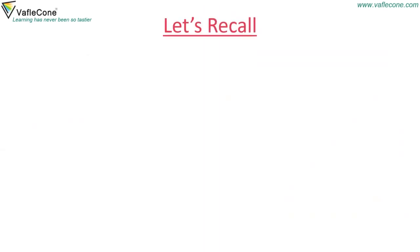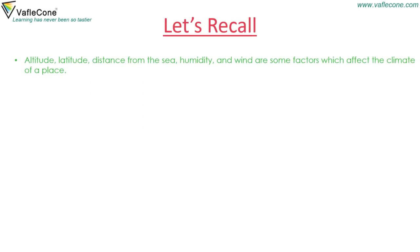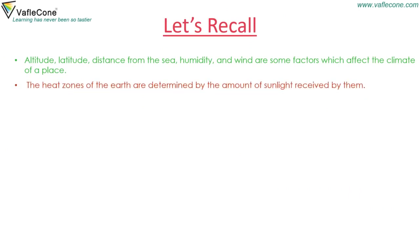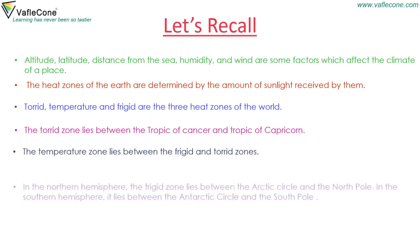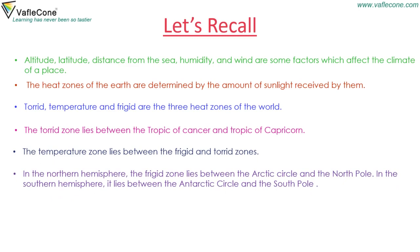Let's recall: altitude, latitude, distance from the sea, humidity, and wind are the factors which affect the climate of a place. The heat zones of the earth are determined by the amount of sunlight received. Torrid, temperate, and frigid are the three heat zones. The torrid zone lies between the Tropic of Cancer and the Tropic of Capricorn. The temperate zone lies between the frigid and torrid zones. In the northern hemisphere, the frigid zone lies between the Arctic Circle and the North Pole; in the southern hemisphere, between the Antarctic Circle and the South Pole.